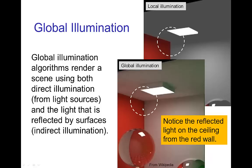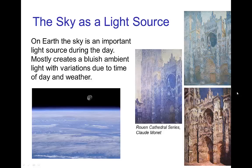You can see that in this comparison of these two rendered images, the one with local illumination has no reflected light from the red wall on the ceiling, while the one with global illumination, you see red light has been reflected onto the ceiling.